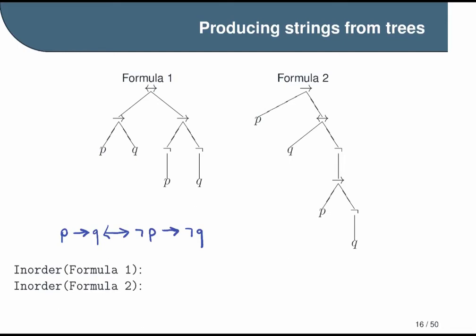And we've now produced the string representation of formula one. Notice, by the way, that one nice thing about our trees is that they make it very easy to tell what is in our set of variables and what is in our set of operators. Our leaves are always propositional variables. And our internal nodes are always operators. And this makes sense because our atoms can't have children.